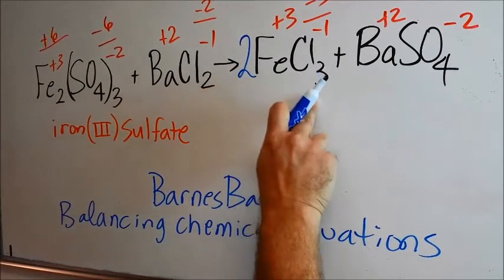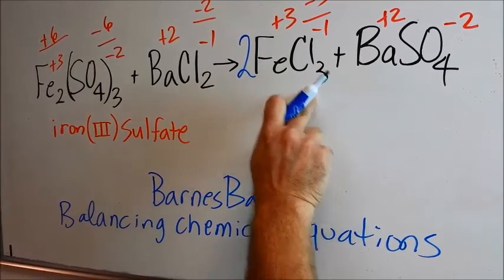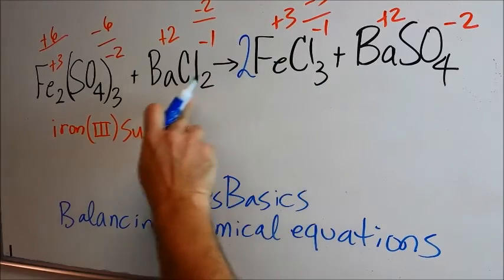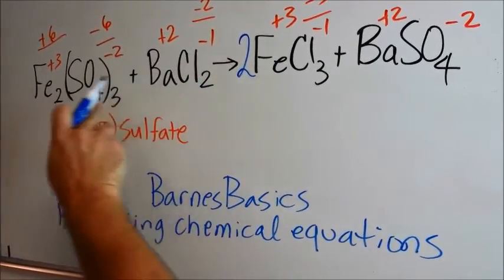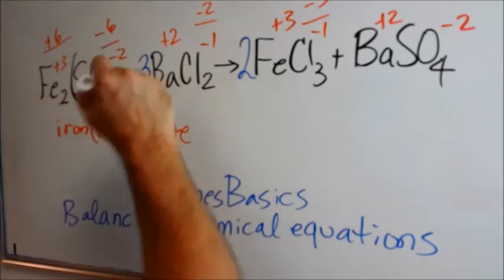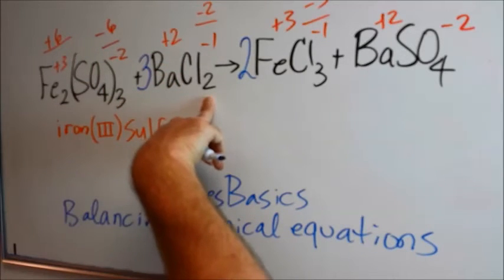That also multiplies the chlorine so that there are now six chlorines here. On the other side there are two chlorines. So I think I'll put a 3 here. 3 times 2 is 6.